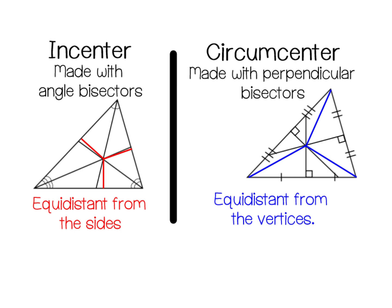Okay, so two other points of concurrency that we talked about are the incenter and the circumcenter. If you remember, the incenter was made with angle bisectors. It's what allowed us to inscribe a circle in a triangle. So I have angle bisectors, so all the angles are divided equally.